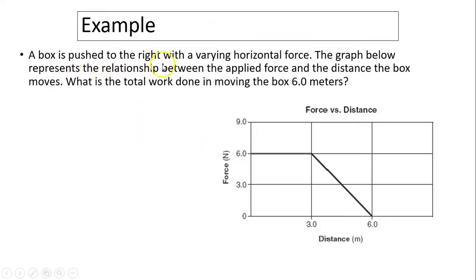For example, a box is pushed to the right with a varying horizontal force. The graph below represents the relationship between applied force and the distance the box moves. What is the total work done moving the box six meters? Well, you can use work equals force times distance. Except here, the force is not constant, so that's kind of hard. So another way to do it is to find area.